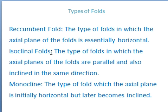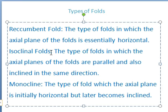Recumbent fold is the type of fold in which the axial plane of the fold is essentially horizontal. Isoclinal folds are the type of folds in which the axial planes of the folds are parallel and also inclined in the same direction.